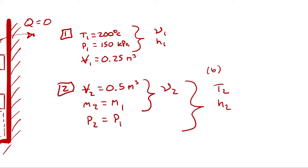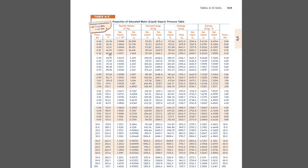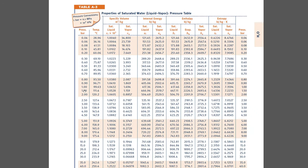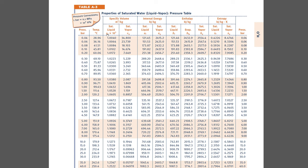At state 1, I have a temperature and pressure of 200 degrees Celsius and 150 kilopascals. First, fix the phase by looking up the saturation temperature corresponding to 150 kilopascals (1.5 bar) in the saturation tables by pressure. The saturation temperature is 111.4 degrees Celsius. Since our temperature of 200 degrees Celsius is higher than 111.4, we have a superheated vapor.